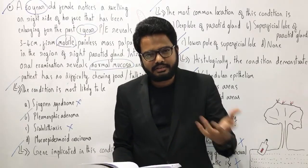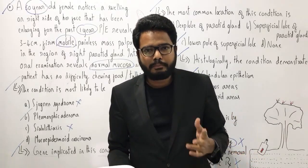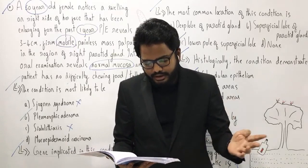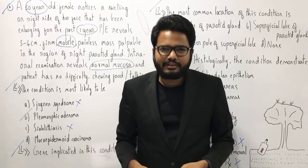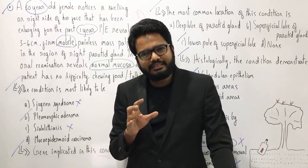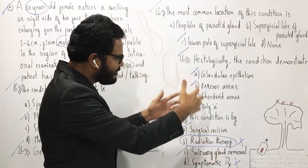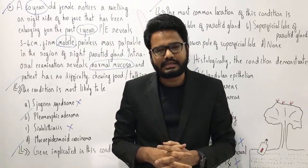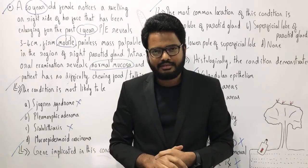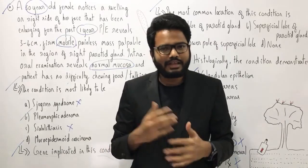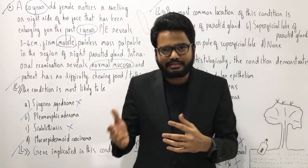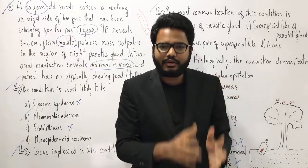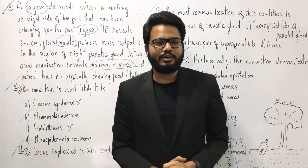Fourth question: note down the differences between benign and malignant salivary gland tumors — there's a table in Schafer's you can refer to. Fifth question: pleomorphic adenoma is called a mixed tumor because we find a mixture of epithelial and mesenchymal cells. But in the true sense, is it mixed? In other words, is it derived from more than one germ layer? So these are the five homework questions. Try to find answers and get back through mail for discussion — I'll guide you accordingly.